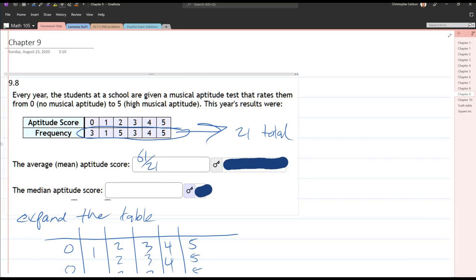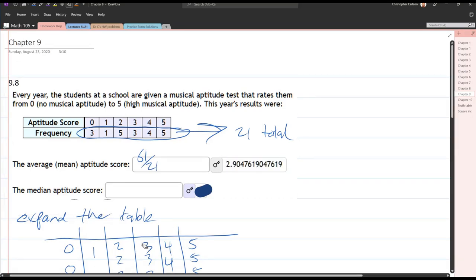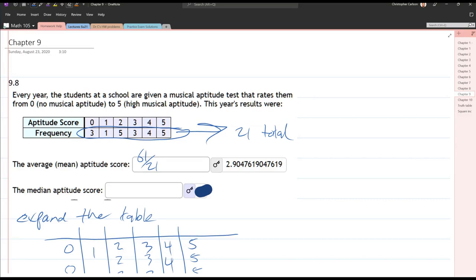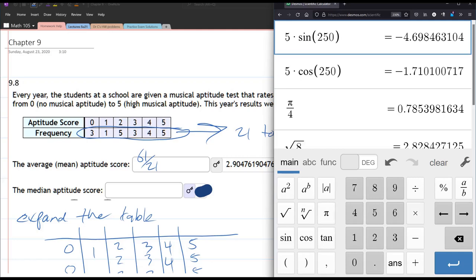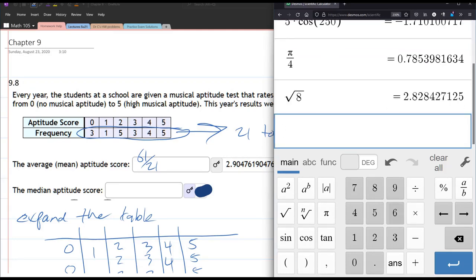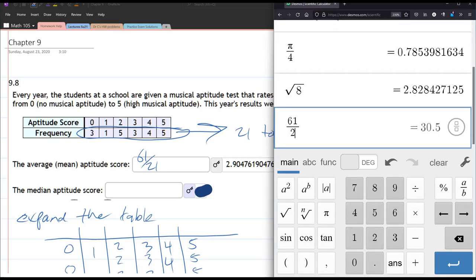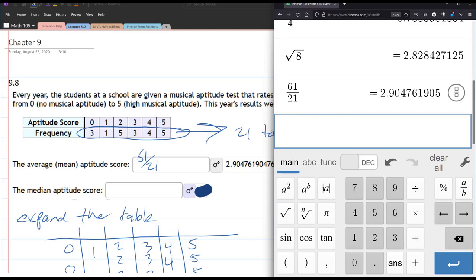So 61 over 21, we'll type that into the calculator. 2.904, perfect.